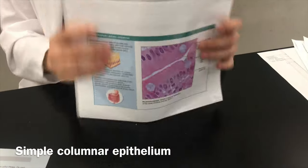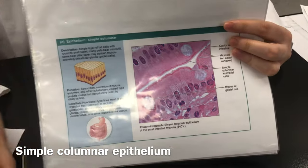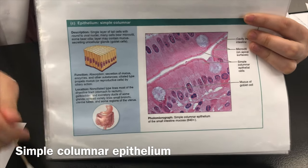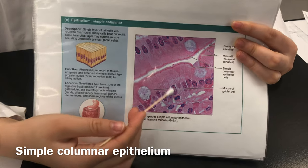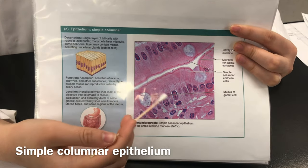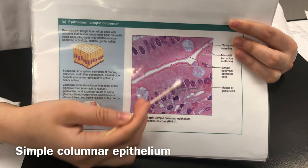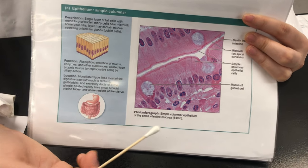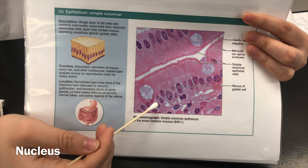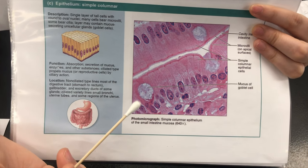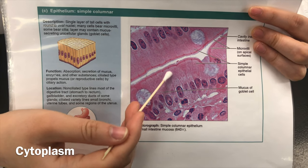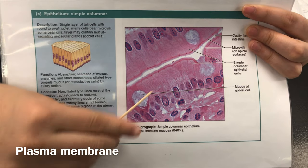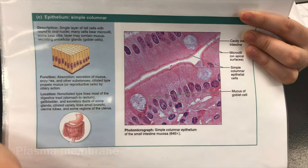Next we have simple columnar epithelium. Both simple squamous and simple columnar are epithelial tissue — remember your four tissue types. Simple columnar is a single layer of column-shaped cells. You need to know the nucleus, this dark spot right here, and the cytoplasm, which is the fluid of the cell — all this space right here is your cytoplasm. The plasma membrane is just the outer covering of the cell.